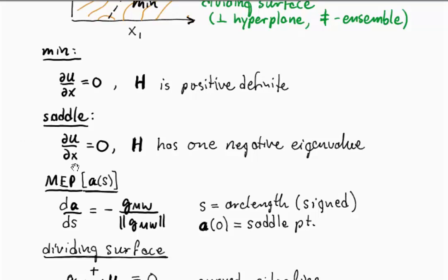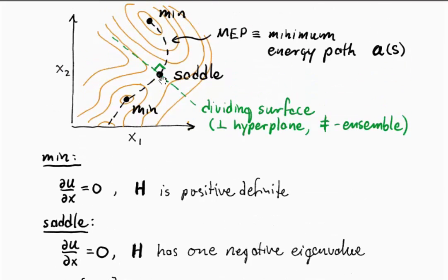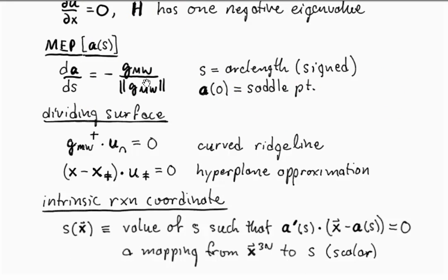Then you have saddle points where you also have the gradient is zero, but in this case we're looking for places where the Hessian has one negative eigenvalue.